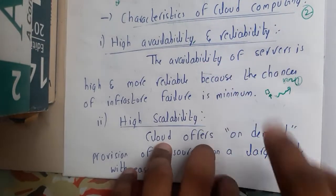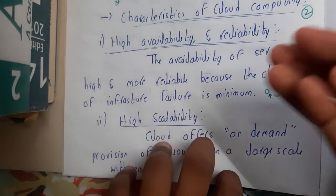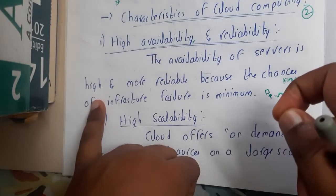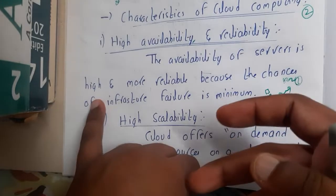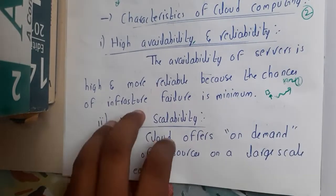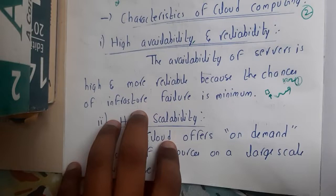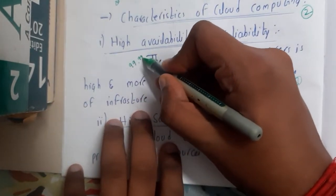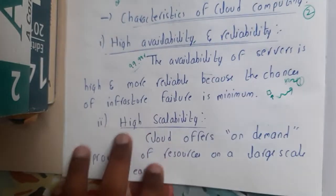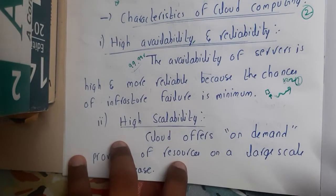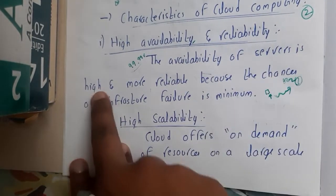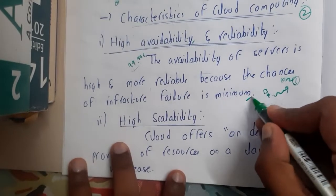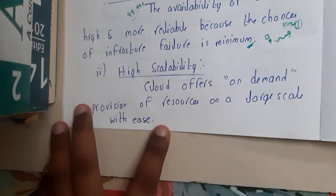That is a major advantage — the availability is really good. The files are stored in servers and the servers will rarely get any issues. We sometimes see 'server is down' messages on websites, but basically that is really rare. Many cloud providers say they offer 99.99% availability — they are that confident about it. The availability of the server is high and more reliable because the chances of infrastructure failure are very minimum. Similarly, cloud is highly scalable.